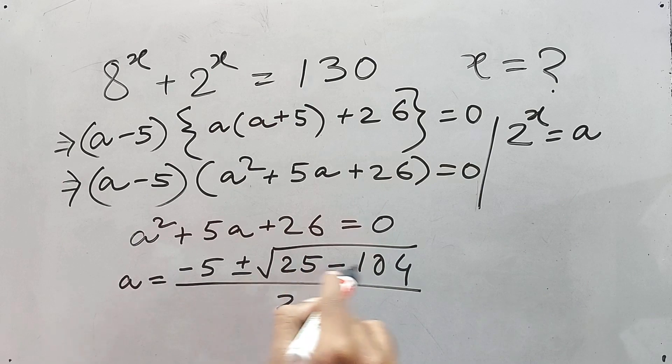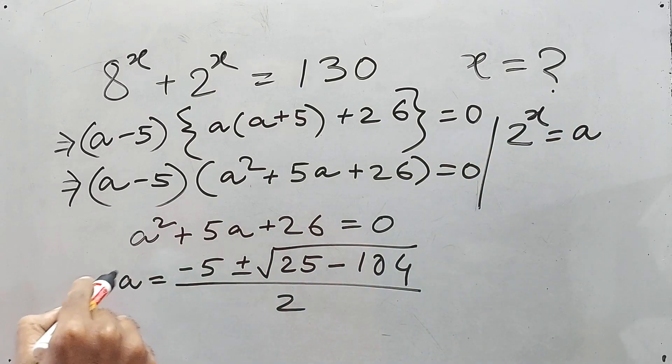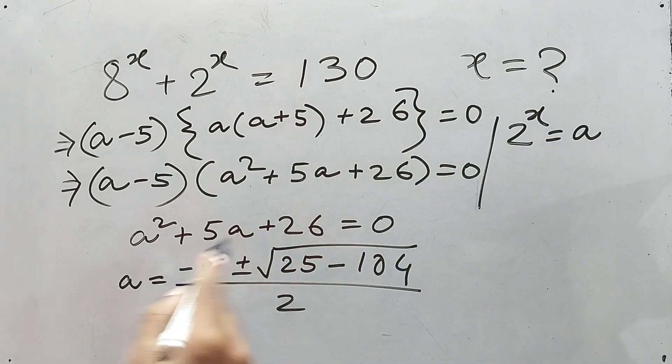But this is an imaginary number, this is not a real number. So it is not possible to get the value of 2 to the power x. This is not a single thing, this a is equal to 2 to the power x, so it's not possible to get the value of this.